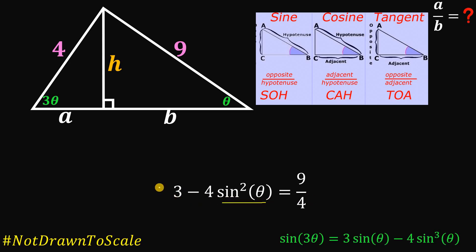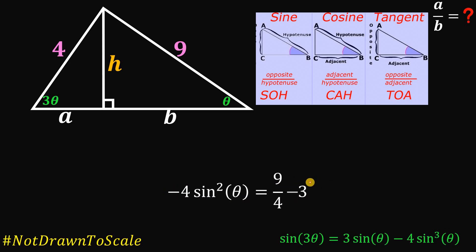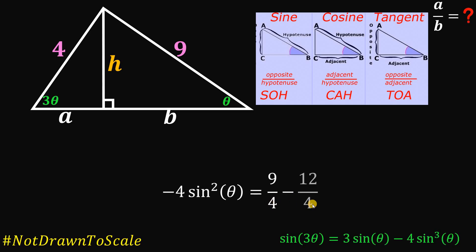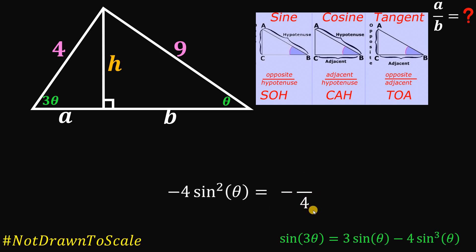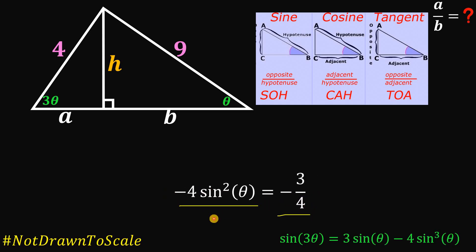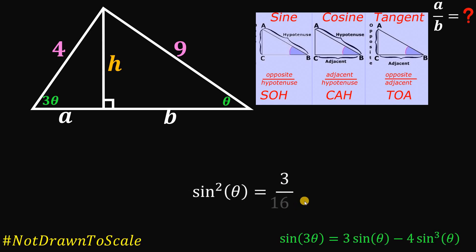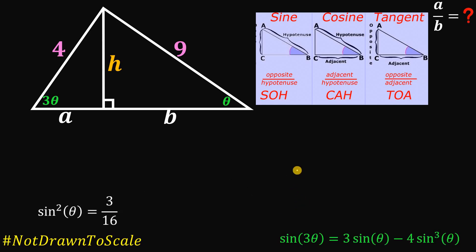Now let's solve for sine squared theta. Subtract 3 from both sides — rewriting 3 as 12 over 4 — giving 9 minus 12 all over 4, which is negative 3 over 4. Dividing both sides by negative 4, we get sine squared theta equals positive 3 over 16. Let's set aside this result.